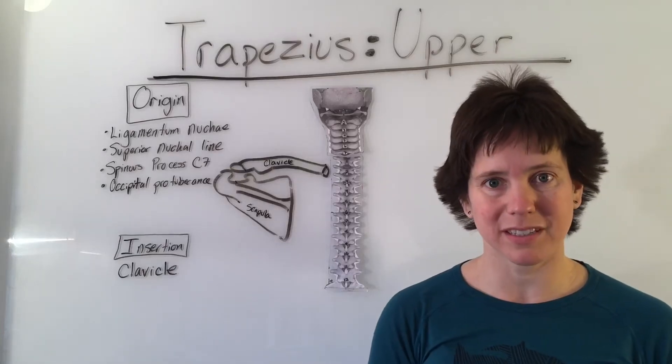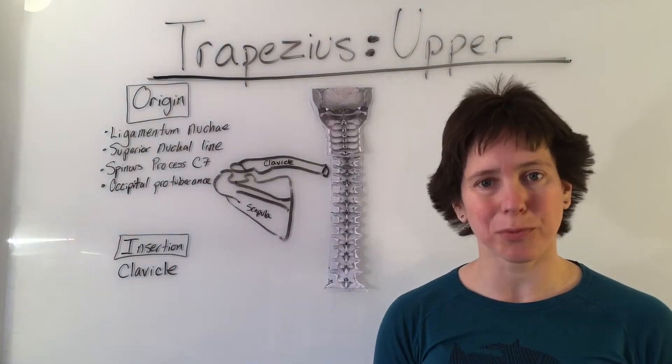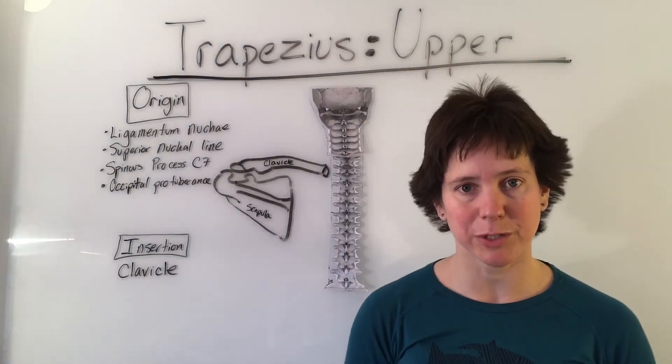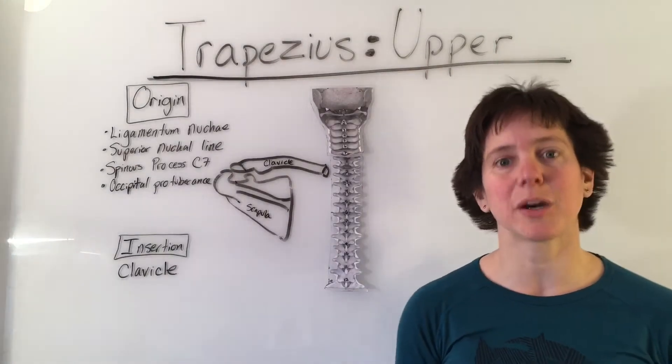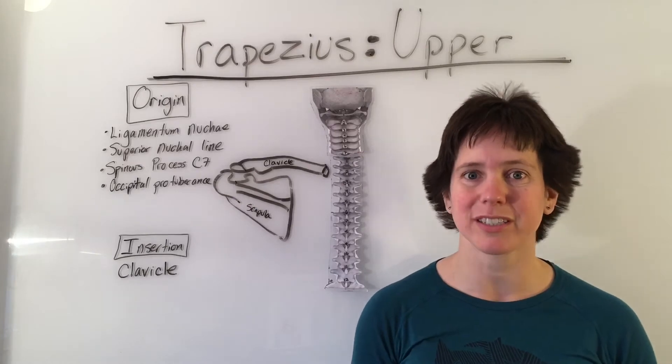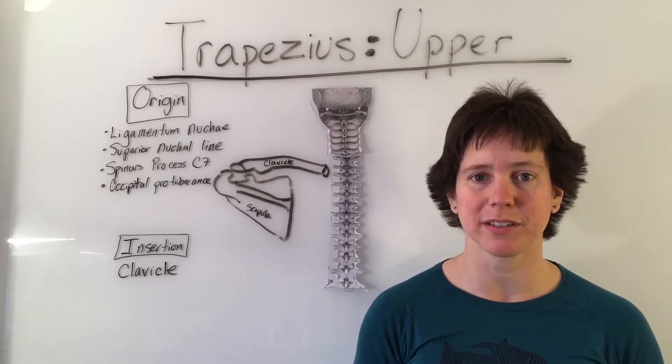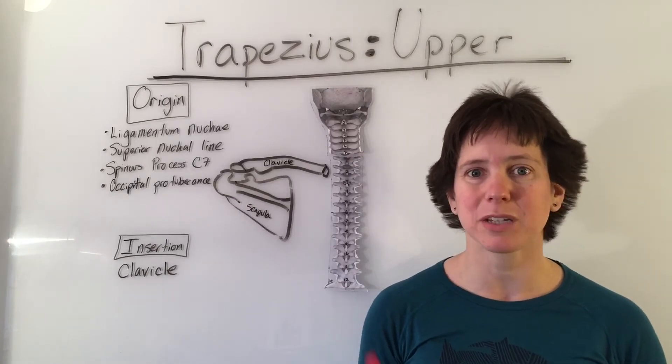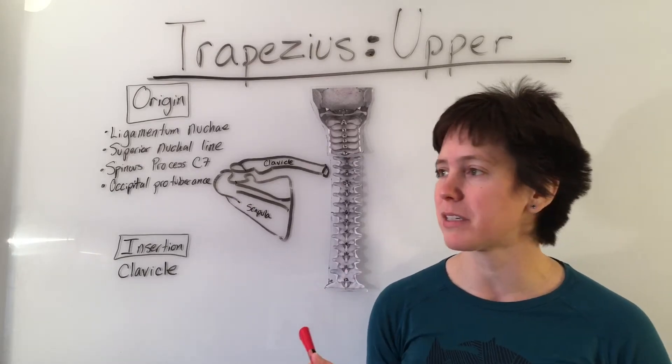The trapezius consists of three main muscle bellies: the upper trapezius, middle trapezius, and lower trapezius. We'll begin with the upper trapezius.